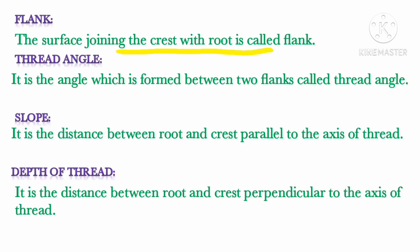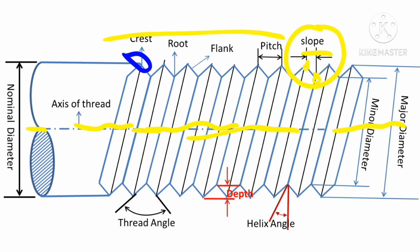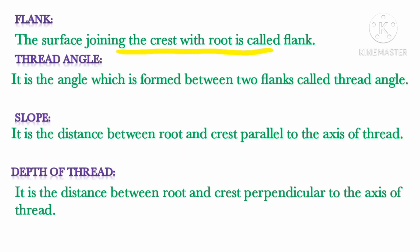Next is slope. Slope is the distance between the root and the crest measured parallel to the axis of the thread. The axis is that central line which passes through the bolt. Slope is the distance between the root and the crest parallel to the axis of the thread, and that line is always parallel to the axis because they are at 0 degrees to each other.